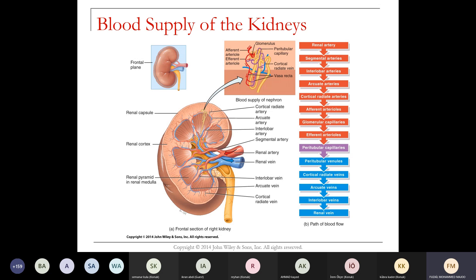Looking at the blood supply of the kidney: the renal artery goes into the segmental artery, then into the interlobar artery, then into the arcuate artery. The arcuates divide into cortical radiate arteries, which divide into smaller afferent arterioles, which then lead to the glomerular capillaries. The glomerular capillaries then connect to the efferent arterioles, which go to the peritubular capillaries. On the venous end, you have peritubular venules, cortical radiate veins, arcuate veins, interlobar veins, and finally the renal vein.